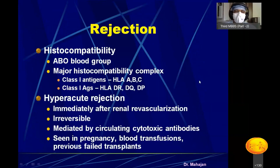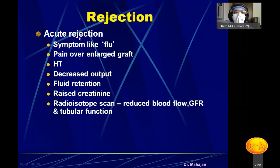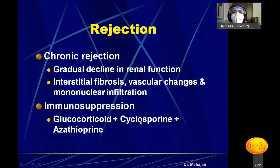Complications after transplant are largely due to HLA antigens — human histocompatibility complex class 1 and class 2 antigens. Hyperacute rejection occurs immediately after kidney placement but is very rare nowadays. Acute rejection presents with flu-like symptoms, pain over the graft, hypertension, decreased urine output, and raised creatinine — it is treated immediately by the nephrologist. Chronic rejection can occur 3 to 6 years post-transplant due to interstitial fibrosis or vascular changes in the transplanted kidney.